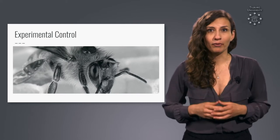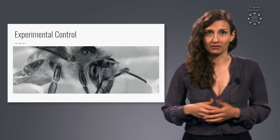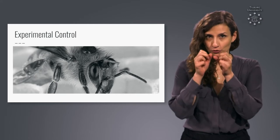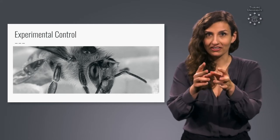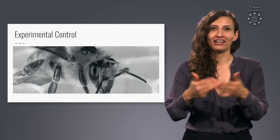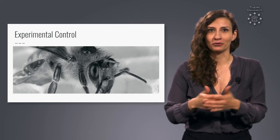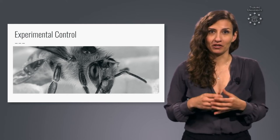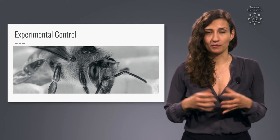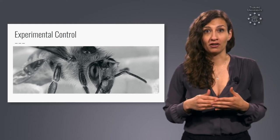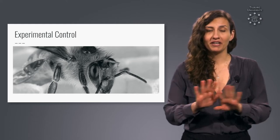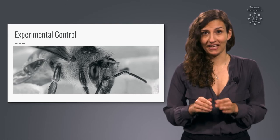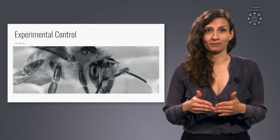Instead, we want to create a controlled environment. That means isolate the bee and zoom in on the thing that we are interested in — the hair on her torso. The same idea applies to experiments. We try to gain experimental control over the situation by eliminating all distractions, so we can study exactly the thing that we are interested in.